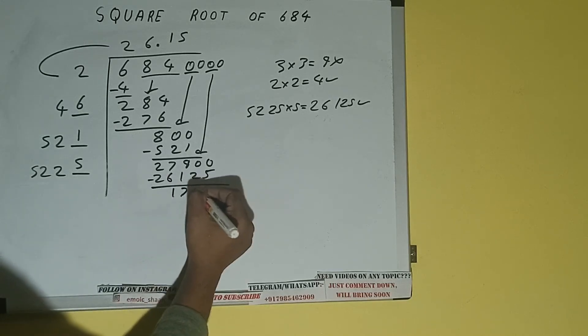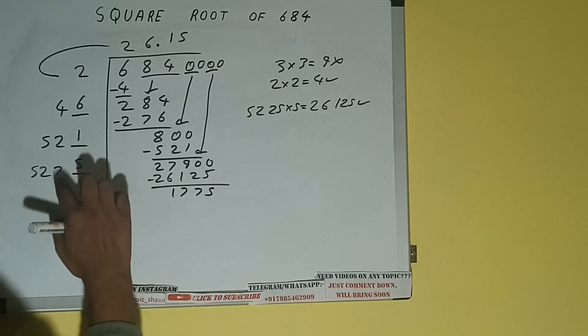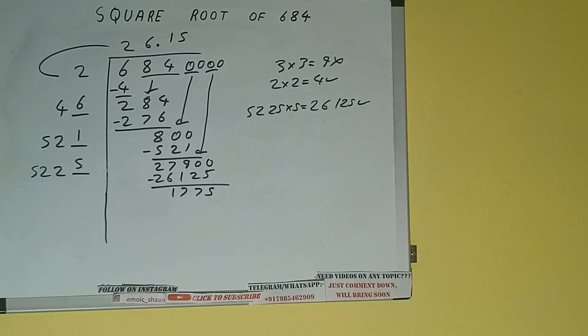And we'll be left with 1,775. Now 5225 into 5 we did, so add both.